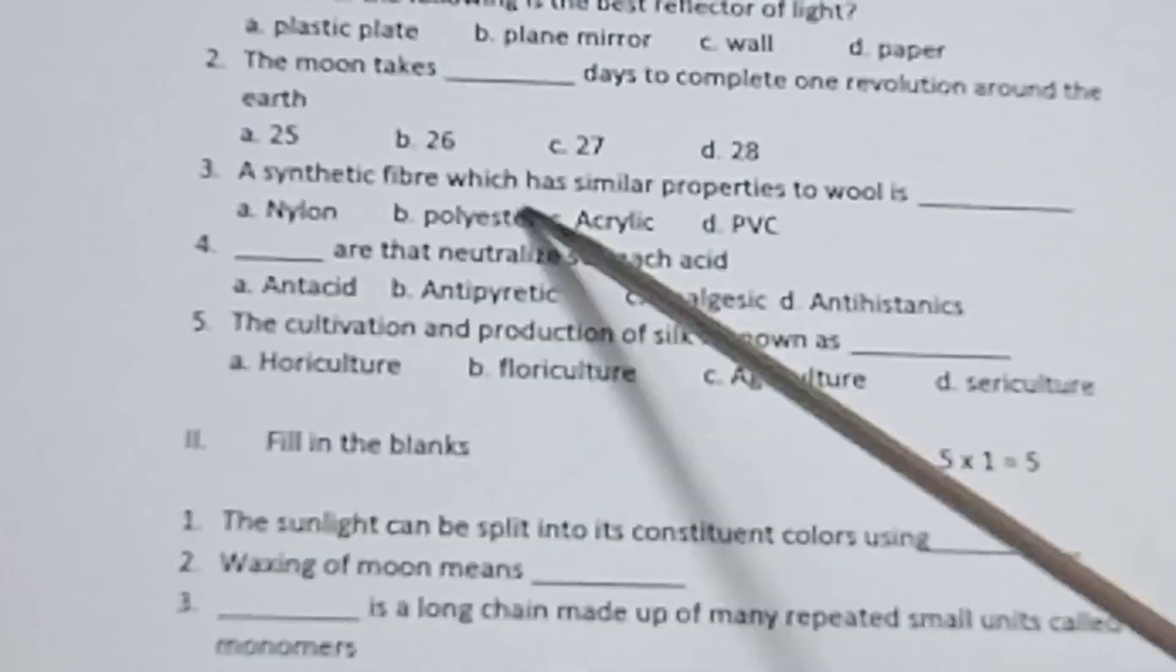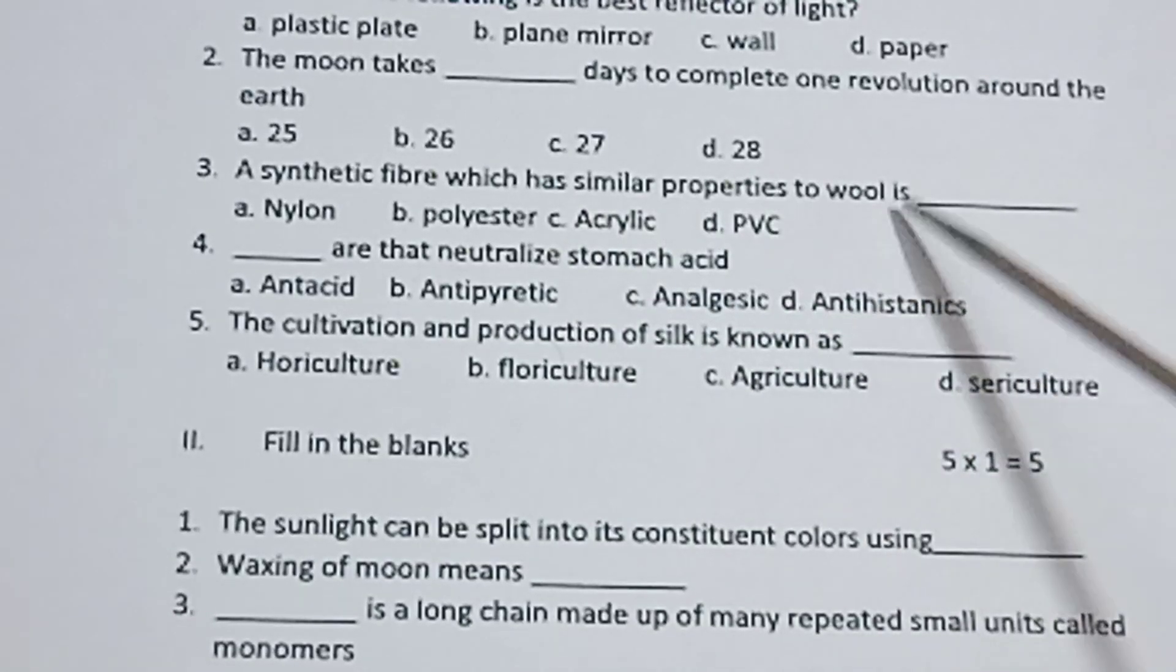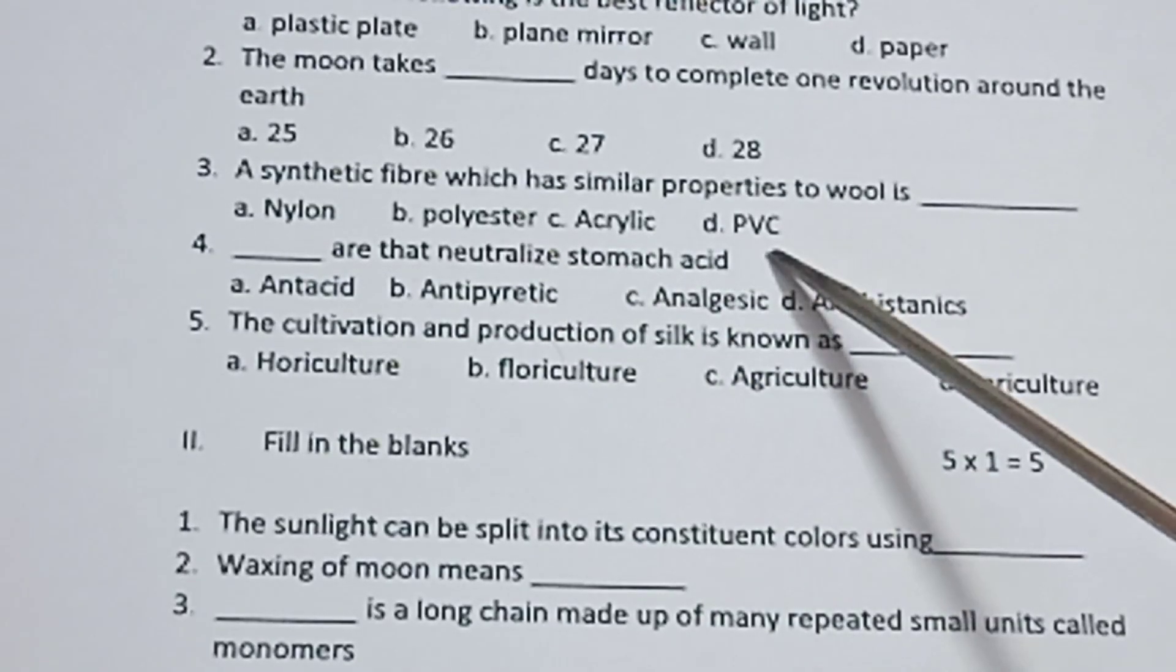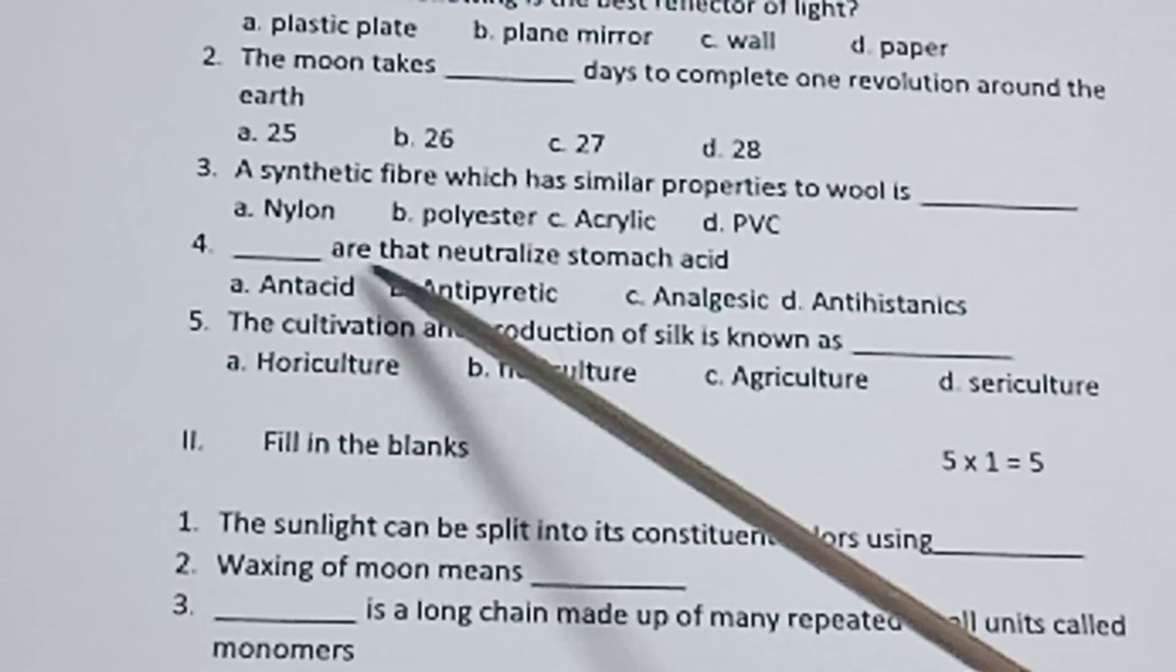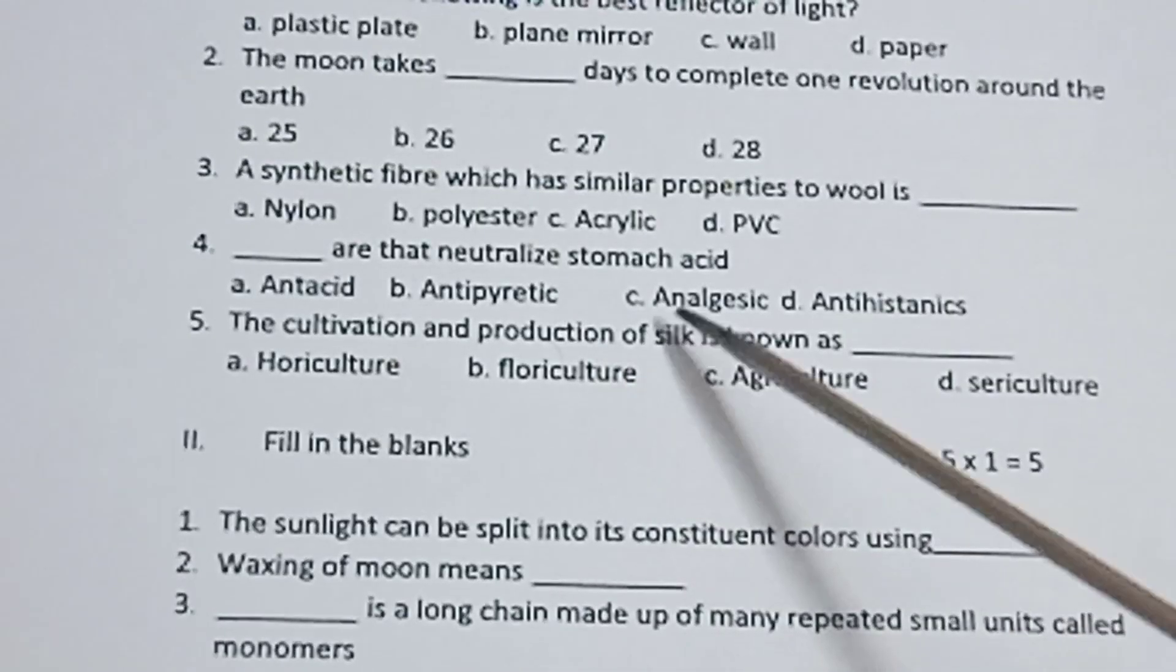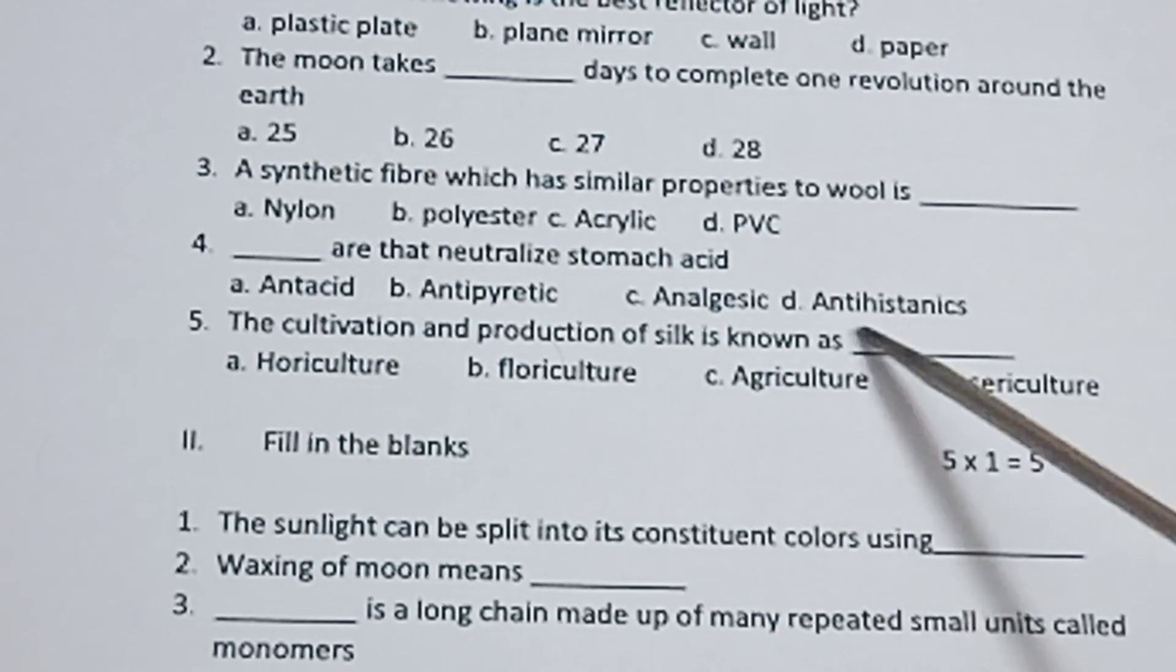A synthetic fiber which has similar properties to wool is: nylon, polyester, acrylic, PVC. Fourth one, dash are that neutralize stomach acid: antacid, antipyretic, analgesic, antihistaminic.